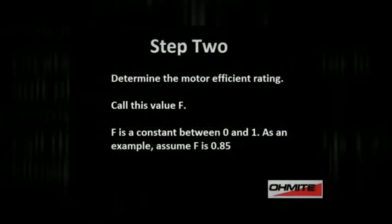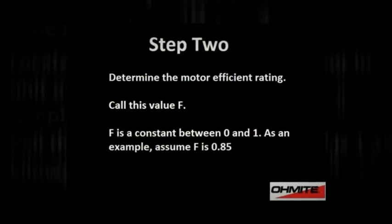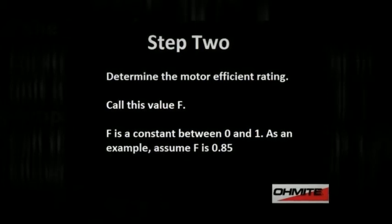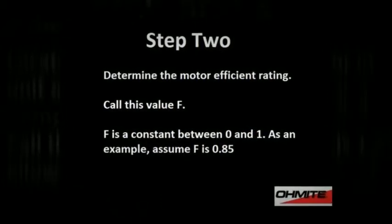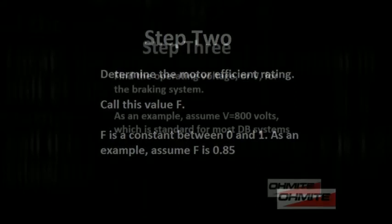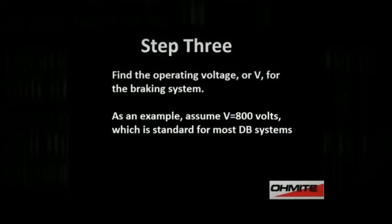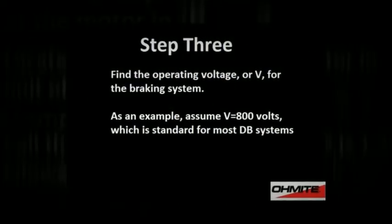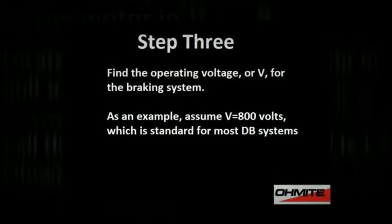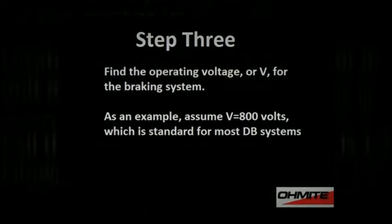Then, determine the motor efficiency rating. Call this value F. F is a constant between 0 and 1. As an example, assume F is 0.85. Find the operating voltage, or V, for the braking system. As an example, assume V is 800 volts, which is standard for most dB systems.